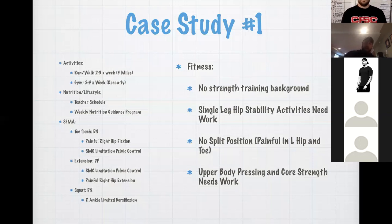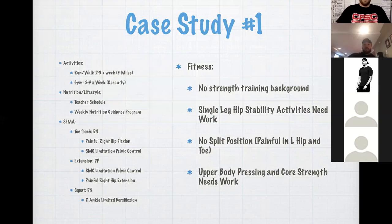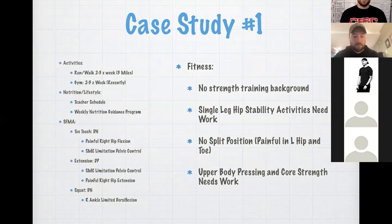The main red lights: anything requiring toe-off on the right side, any split position work, and any impact activities. With those out, we can start with basic core work, med ball work, upper body pressing, and entry-level bilateral work — plenty to get her started.